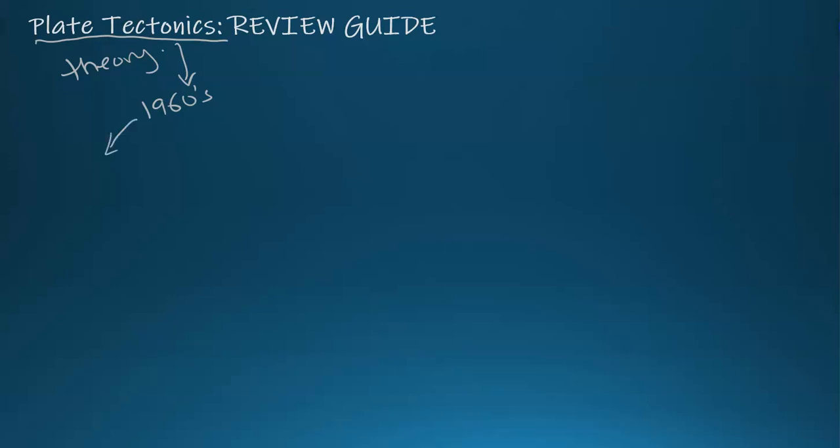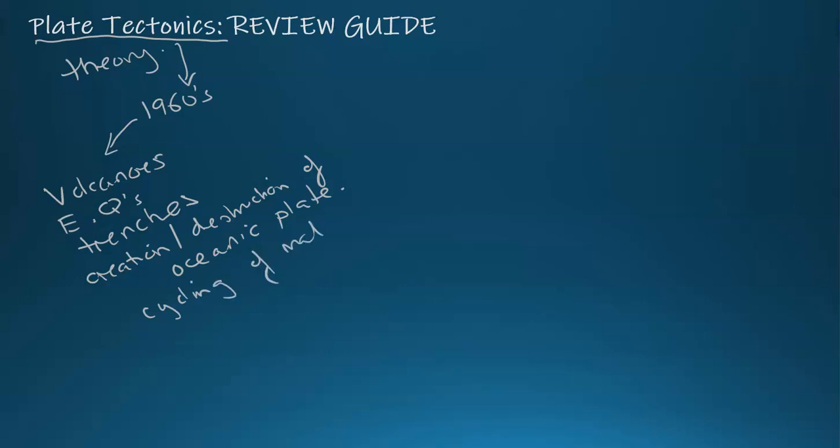It really is an all-encompassing umbrella theory that gives light to explain how volcanoes form and behave and erupt, earthquakes and why they're there at certain depths, the production of ocean trenches, and the creation and destruction of oceanic crust or oceanic plate.